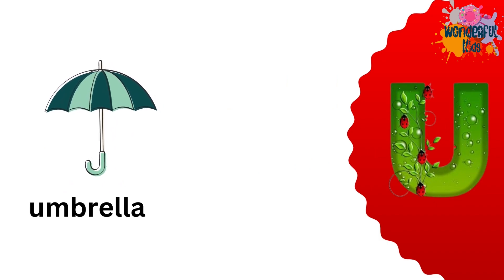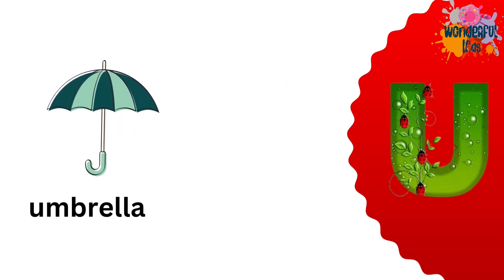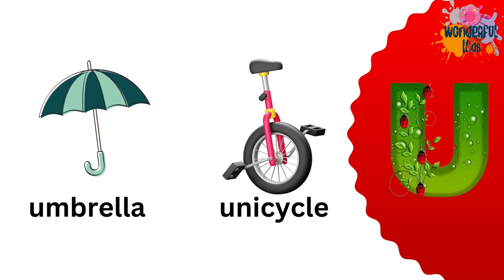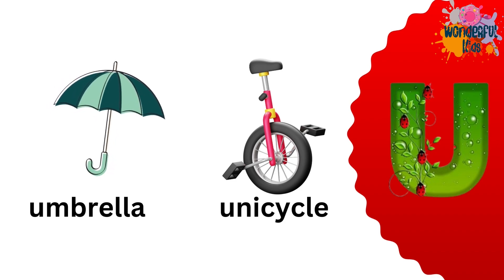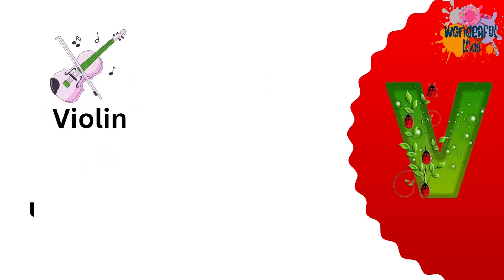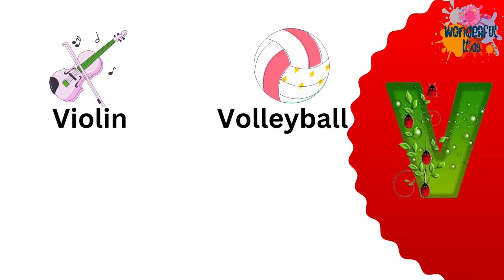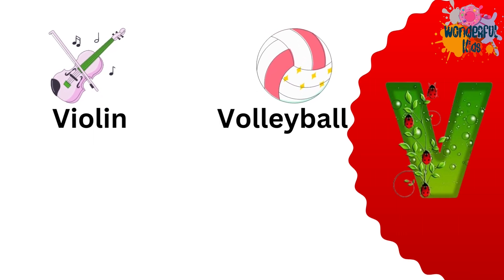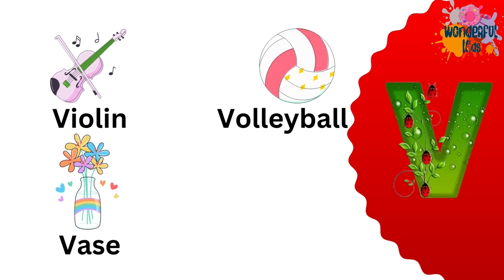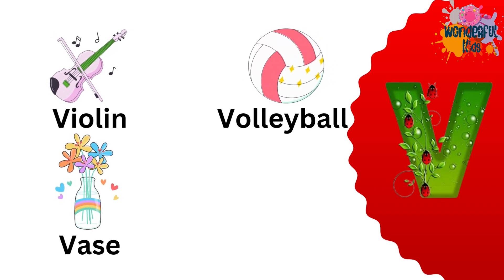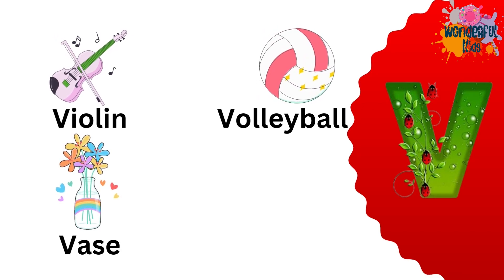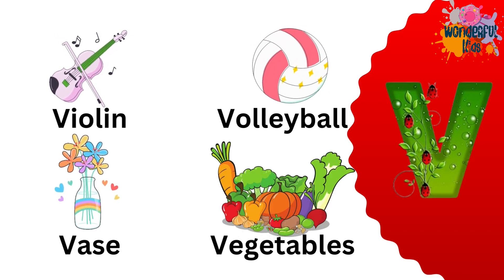U for umbrella. U for unicycle. V for violin. V for vegetables.